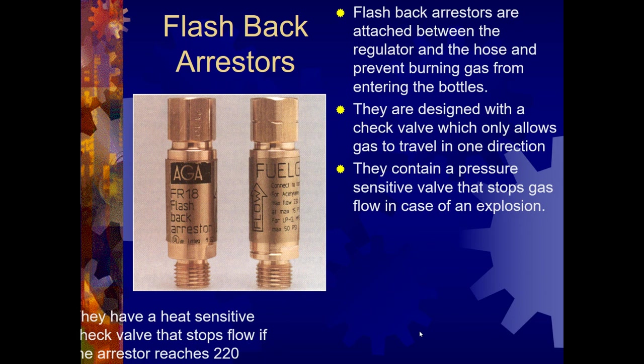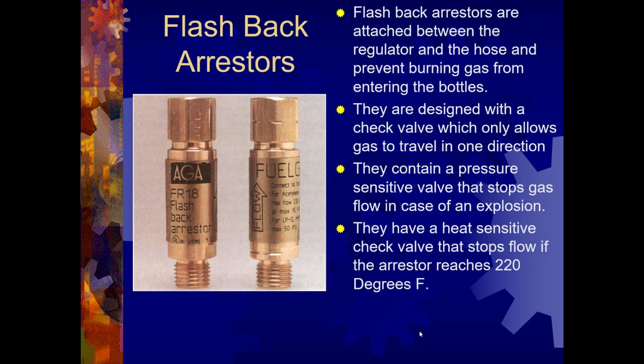Let's take a moment to look at a flashback arrestor. A flashback arrestor is attached between the regulator and the hose. This prevents gas from ever entering back into the bottles. There are rare situations in which gas can actually be flashed back into the bottle and be very dangerous if we don't have a flashback arrestor. They're designed with a one-directional check valve, and they can sense when there is a higher pressure and prevent explosions.